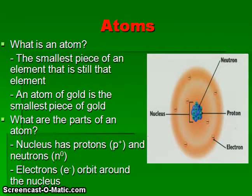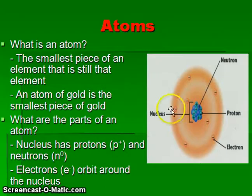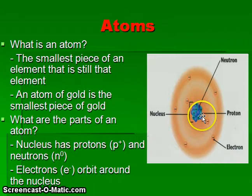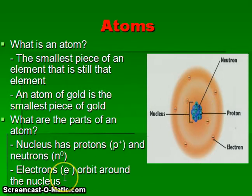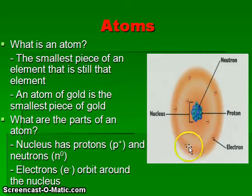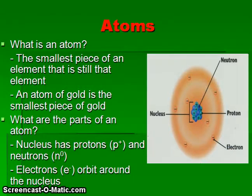Atoms are the smallest piece of an element which is still representative of the properties of that particular element. For example, an atom of gold is the smallest piece of gold we could ever have. The nucleus of an atom contains two types of particles: protons, which have a positive charge, and neutrons, which have no charge. The third type of particle found in atoms are electrons, which orbit the nucleus in energy levels or electron clouds and have a negative charge.